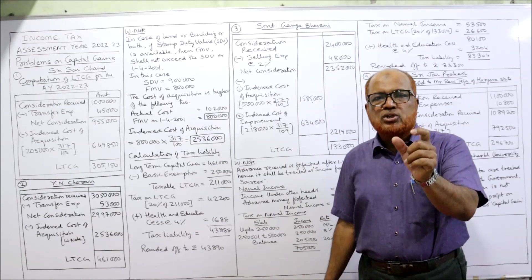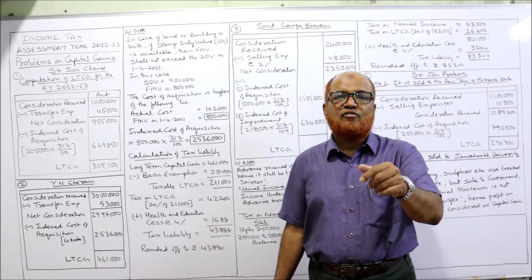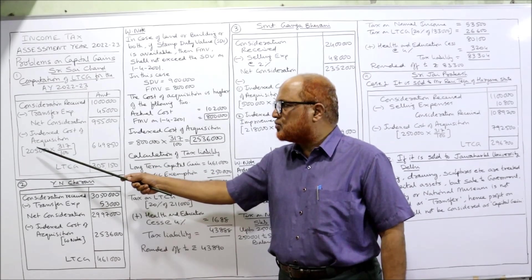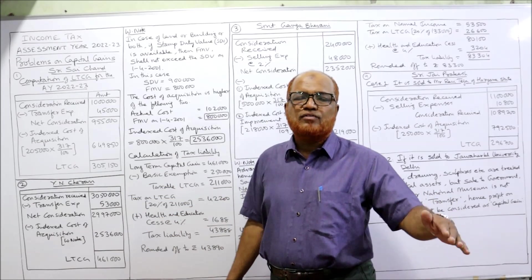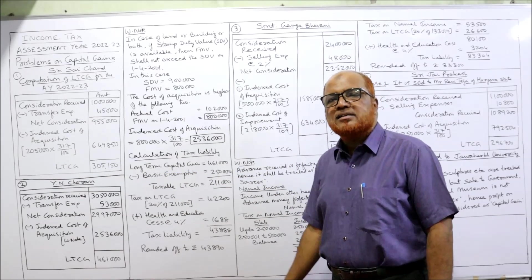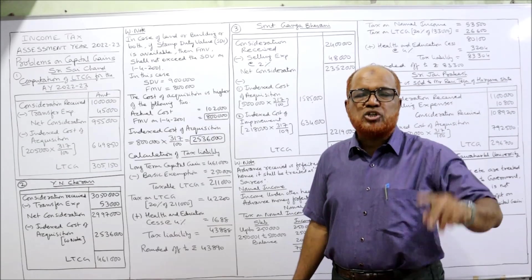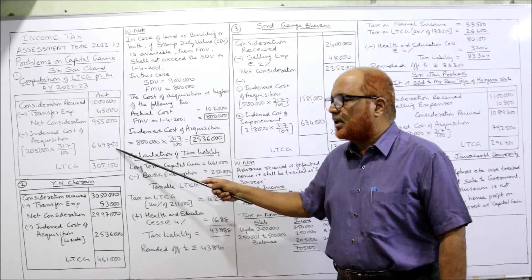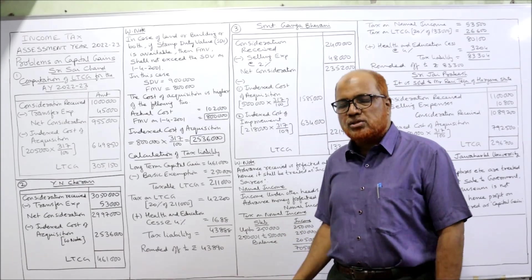So how to calculate? Actual cost multiplied by index of previous year, divided by index of purchase year. Here, the actual cost of the gold ornaments was Rs. 2,05,000. The index number of the previous year 2021-22 is 317, divided by the index number of the purchase year — given in the problem as 100. So 2,05,000 into 317 by 100 comes to Rs. 6,49,850. Deduct, and we get the LTCG — long-term capital gain — of Rs. 3,05,150.